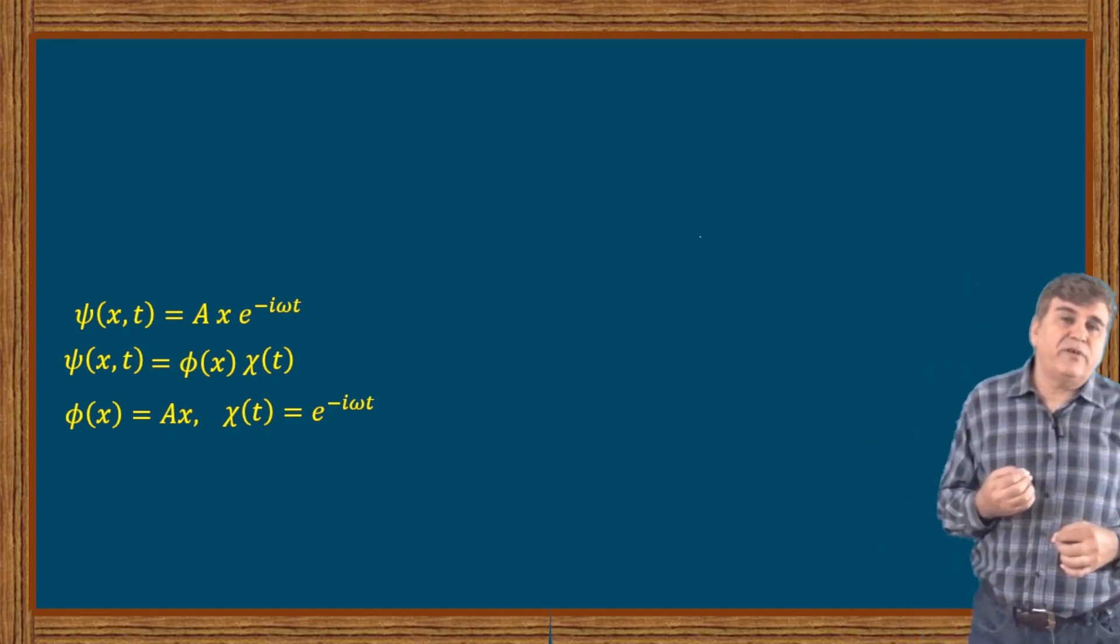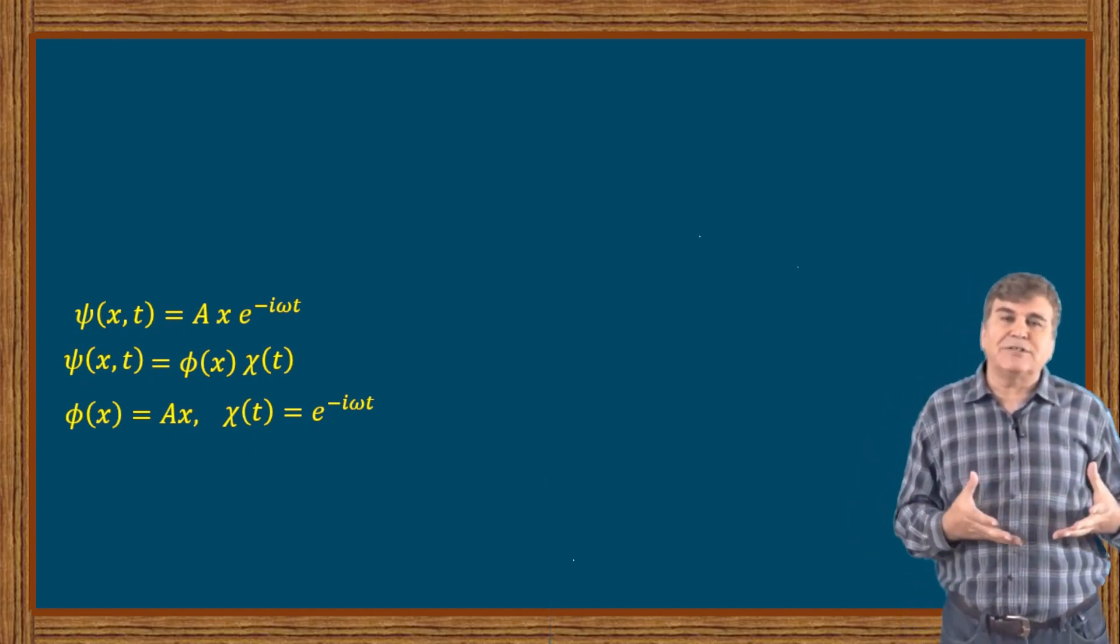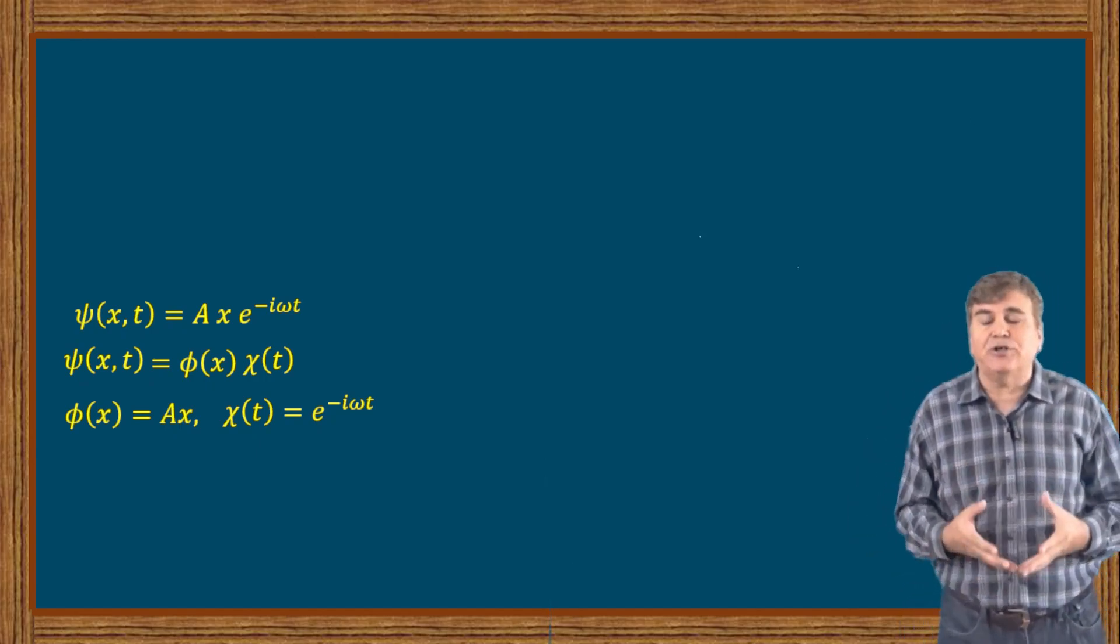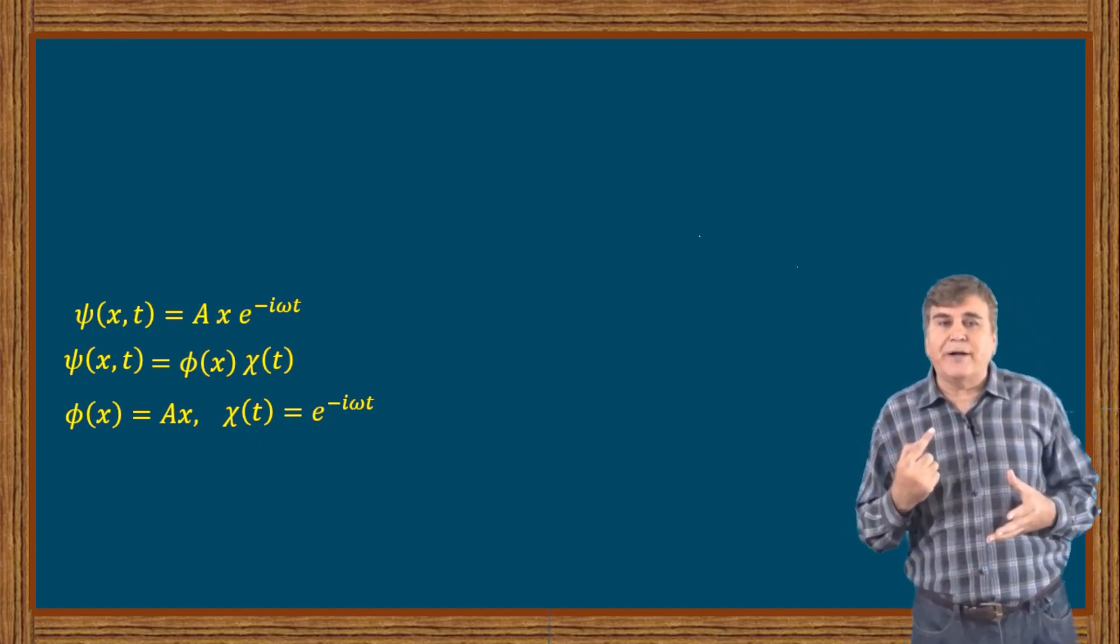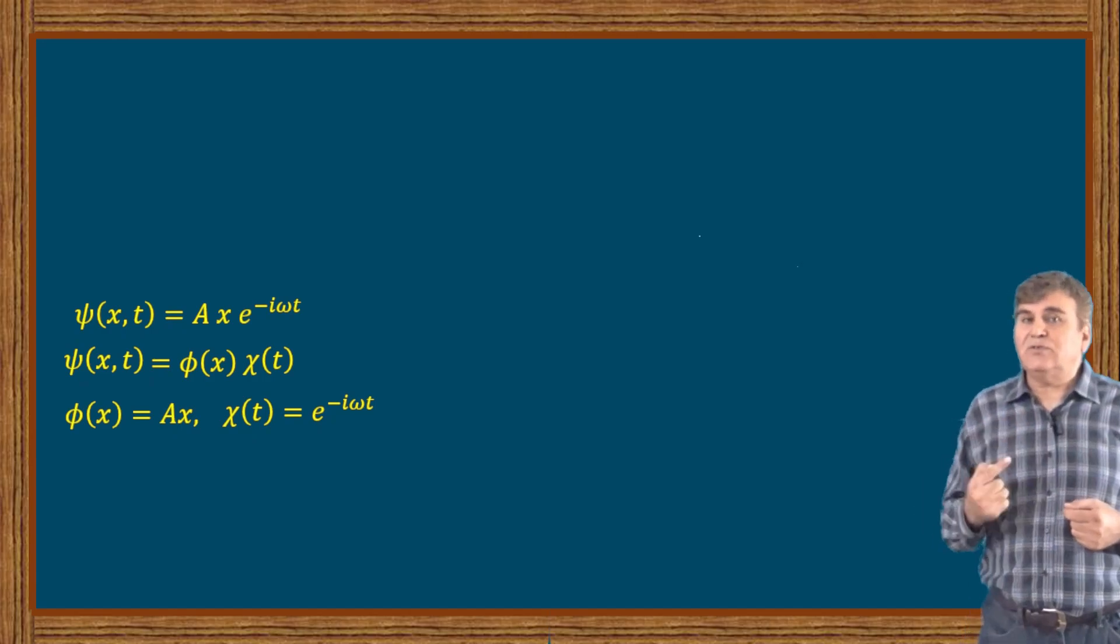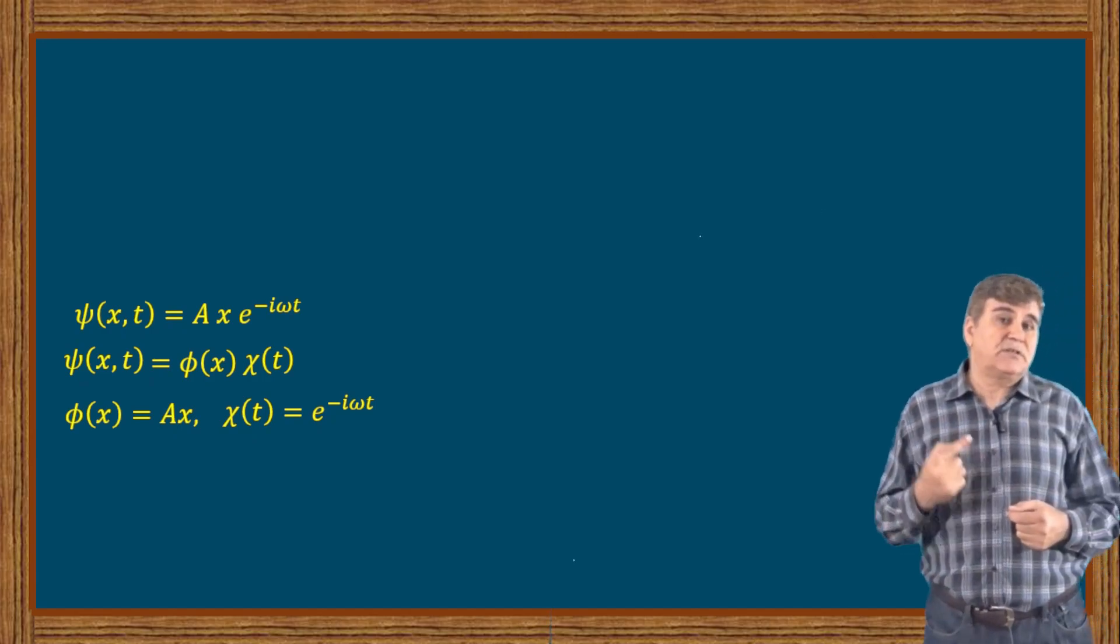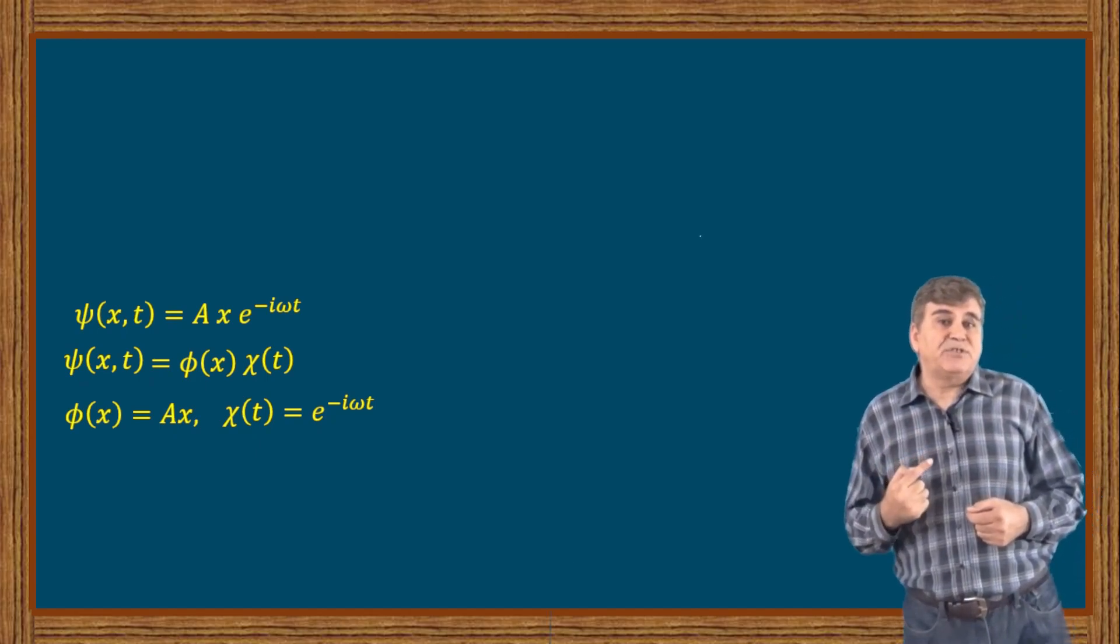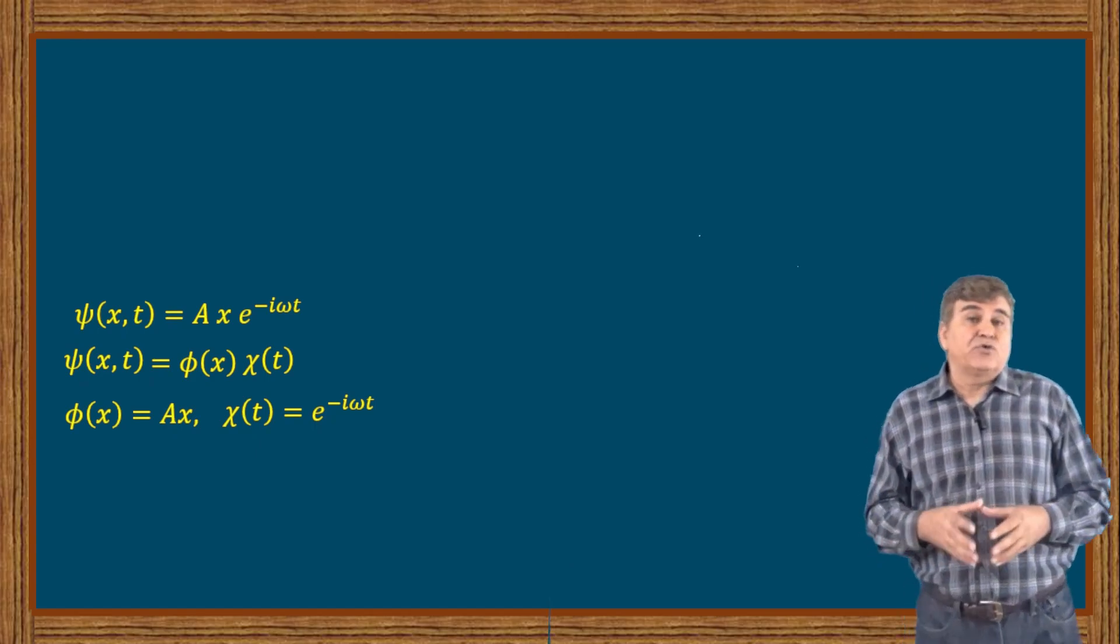There are four conditions on wave functions to be physically valid. The first one: the wave function must be continuous. The second one: the wave function must be single-valued. The third one: it must be finite and square integrable.